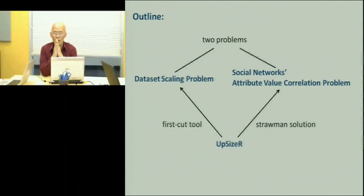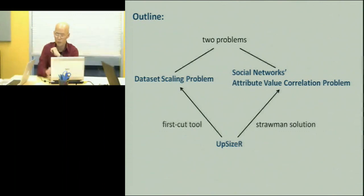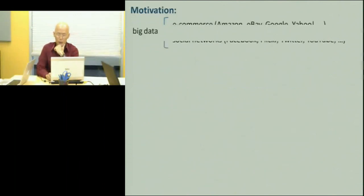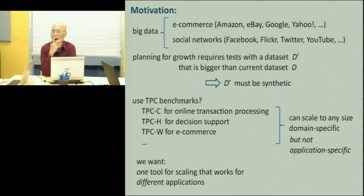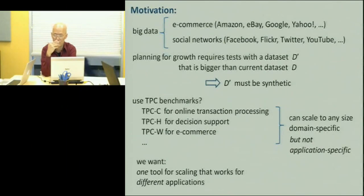Upsizer deals with two problems. One of them I call the dataset scaling problem, and the other one I call the social networks attribute value correlation problem. Upsizer is a tool that looks at these two problems. We were thinking about big data when we came up with this idea — big data could mean astronomy data or genomic data — but for this talk, we are focused on stuff like internet services, e-commerce, or social networks.